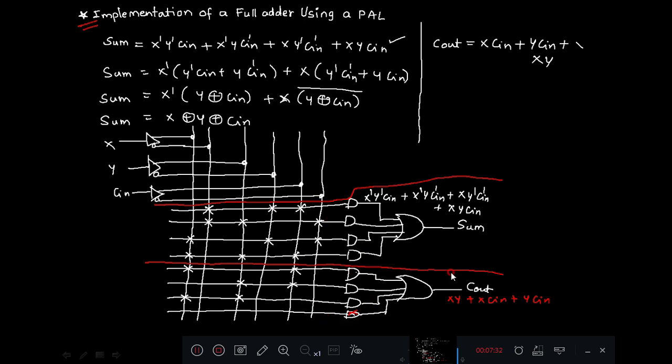Next for COUT you observe only three product terms are required, so only three AND gates are used. The fourth AND gate is not used. So only three AND gates are used to compute three sum of product terms and then COUT is computed. The fourth one is left as it is.